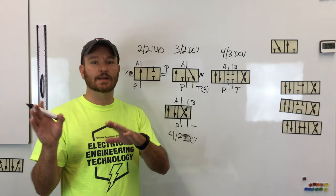You have to be able to identify and know what these configurations mean. For example, with a four-three, most four-threes have two springs on them — this is called spring centered. The reason they're spring centered is that we want the normal position to be in the center, and then you can select different center configurations depending on the application.